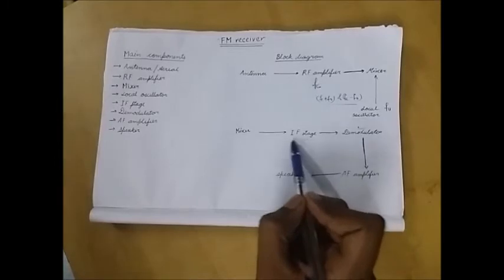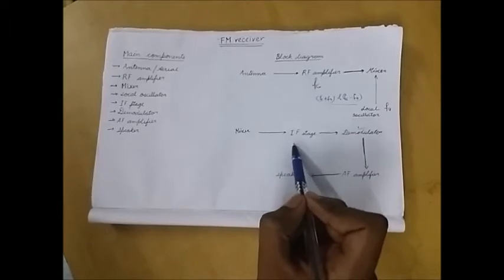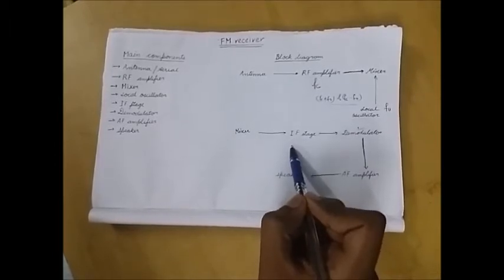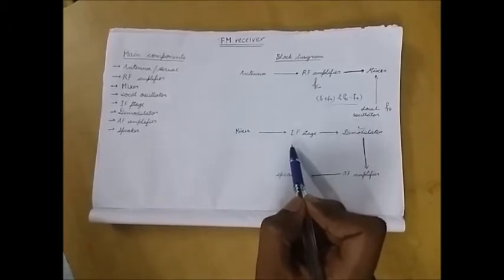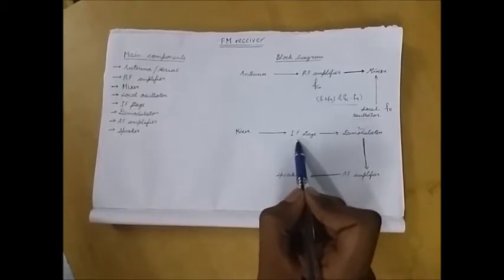Now the IF stage. It consists of IF filter as I stated above. It just selects a specific frequency desired by the user. It filters the signal from the mixer. Then it also has the IF amplifier which amplifies the input.